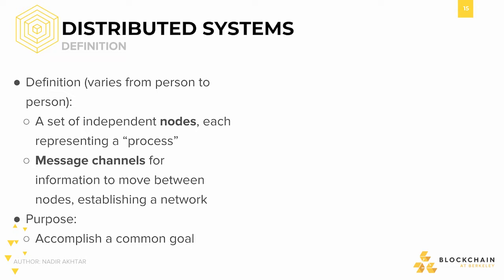So what is a distributed system? The definition of a distributed system changes depending on who you ask, but the general consensus is that distributed systems contain two particular categories of components. The first category is referred to as nodes. Nodes are meant to represent separate machines or processes. This separation manifests in the real world as physical distance, such as in Bitcoin, or just a separation of components, similar to the CPU cores in your laptop.